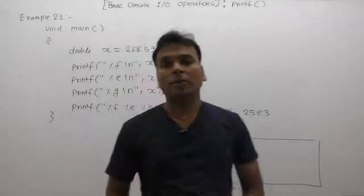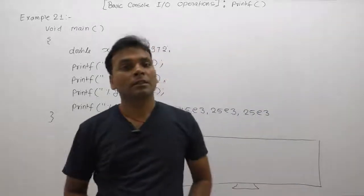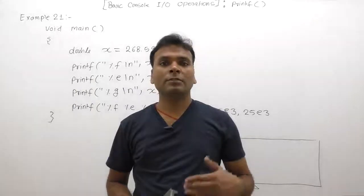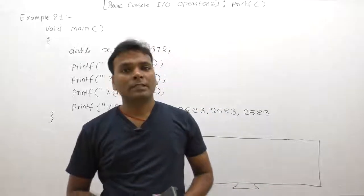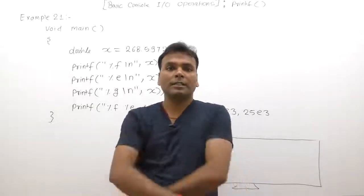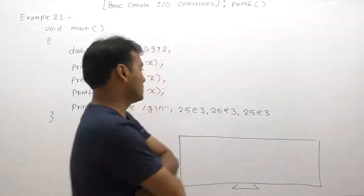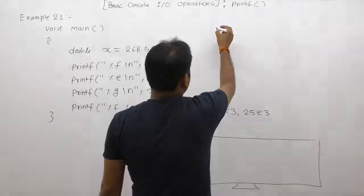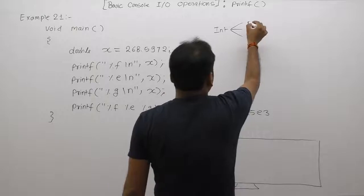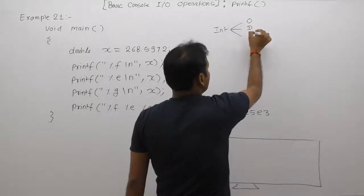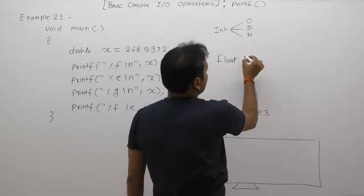Let's look at the next example about printf with respect to decimal or floating point numbers. In previous examples, we only discussed integers, strings, or characters. Now we discuss decimal numbers or floating point numbers in detail. Just as an integer number can be represented in three different number systems — octal, decimal, and hexadecimal — a floating point number can also be represented in two representations.